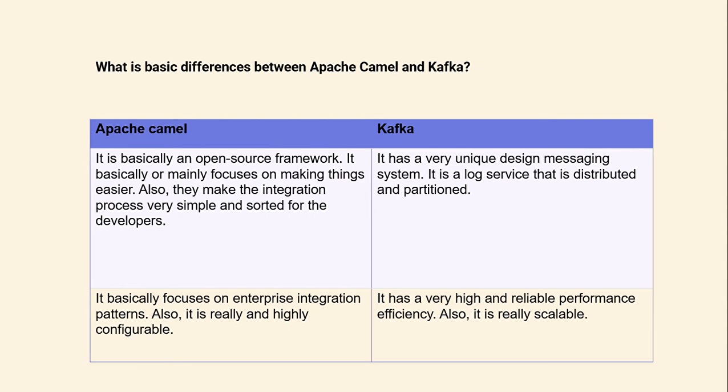What is the difference between Apache Camel and Kafka? Apache Camel is an open-source framework mainly focused on making integration easier and simpler for developers. Kafka is a unique messaging system — a distributed, partitioned log service. Apache Camel is focused on enterprise integration patterns and is highly configurable, whereas Kafka has very high and reliable performance efficiency and is highly scalable.